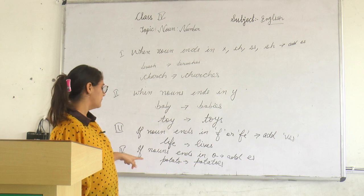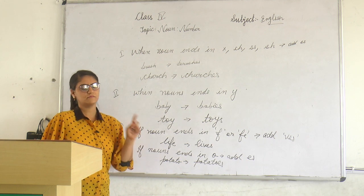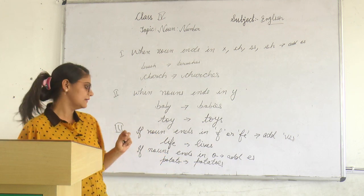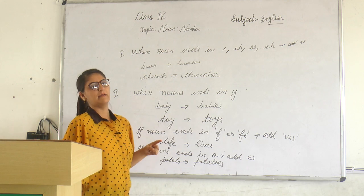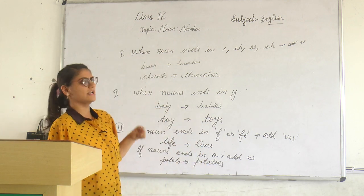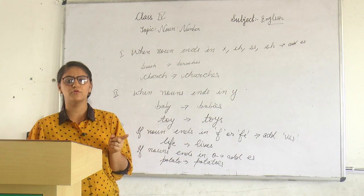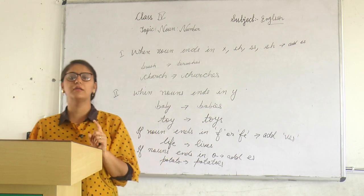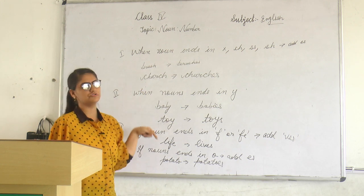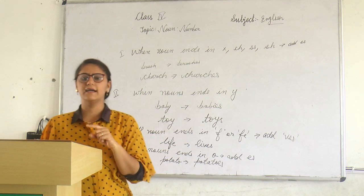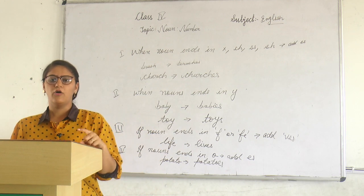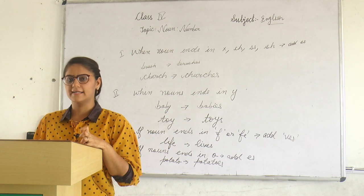There are also certain nouns which do not follow any rule — they are irregular. We convert them into plural form as: child becomes children, ox becomes oxen. These you have to remember. Keep all these rules in mind for making a noun into plural form. I hope you have understood the topic. Thanks a lot.